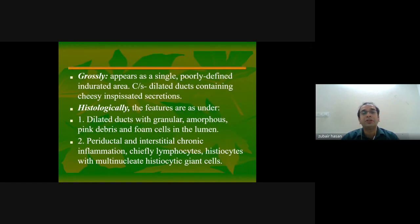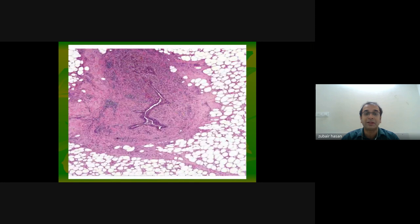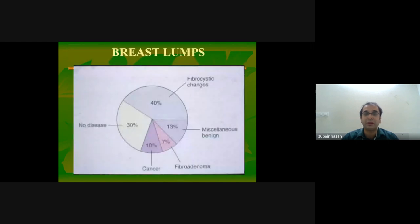Grossly, duct ectasia appears as a single poorly defined indurated area. On cut surface you have dilated ducts containing cheesy inspissated secretions. Histologically, you find dilated ducts with granular amorphous pink debris and periductal and interstitial chronic inflammatory cell infiltrate — the blue areas visible under microscopy represent those inflammatory cells.